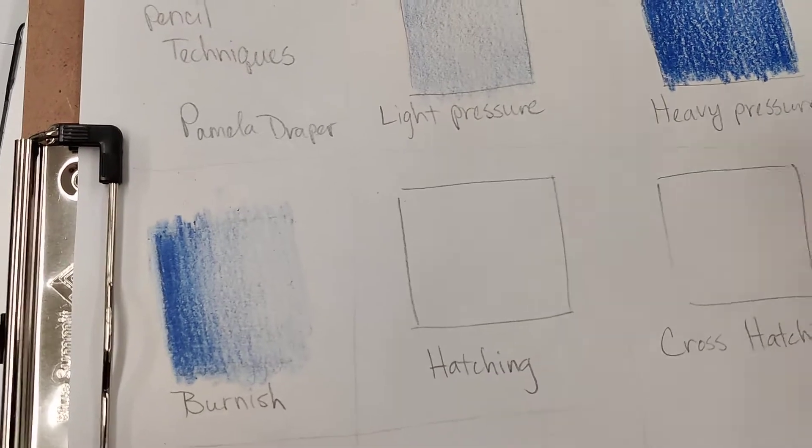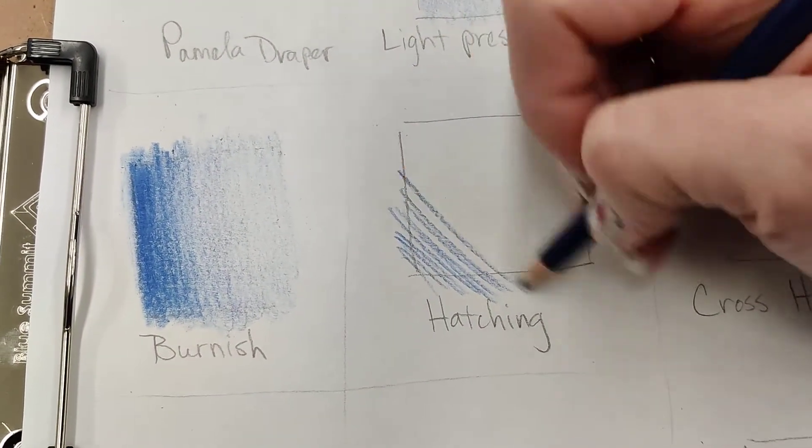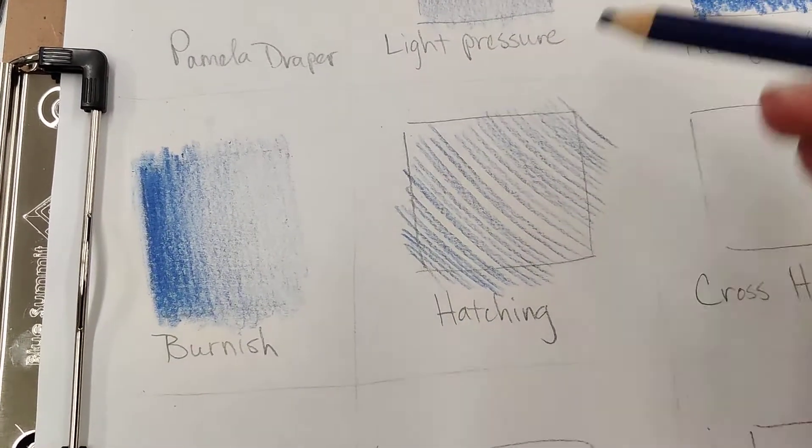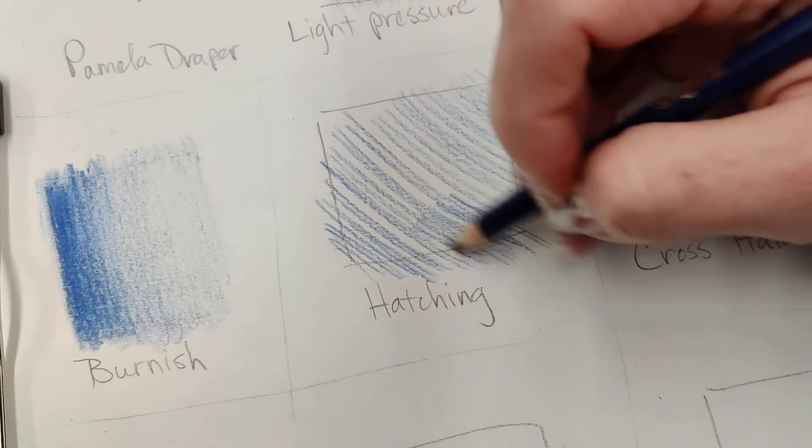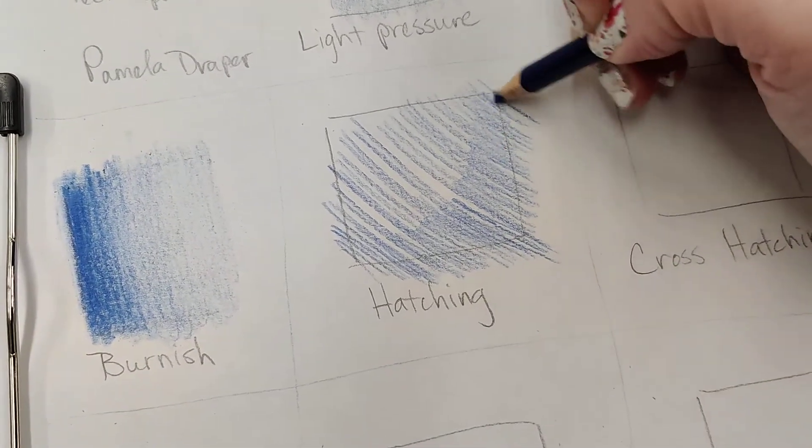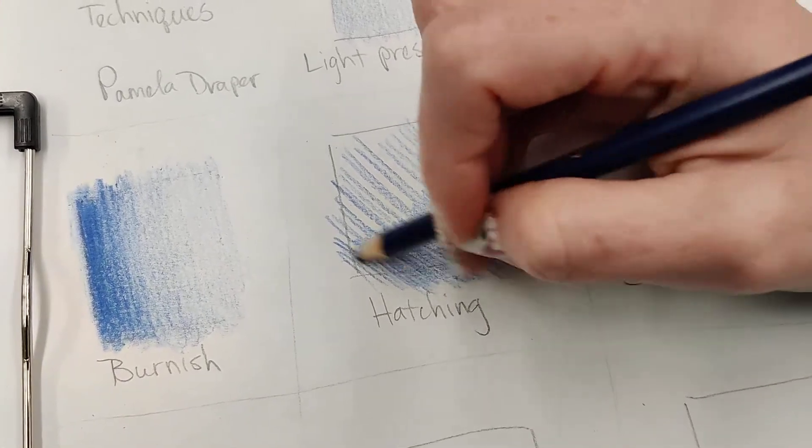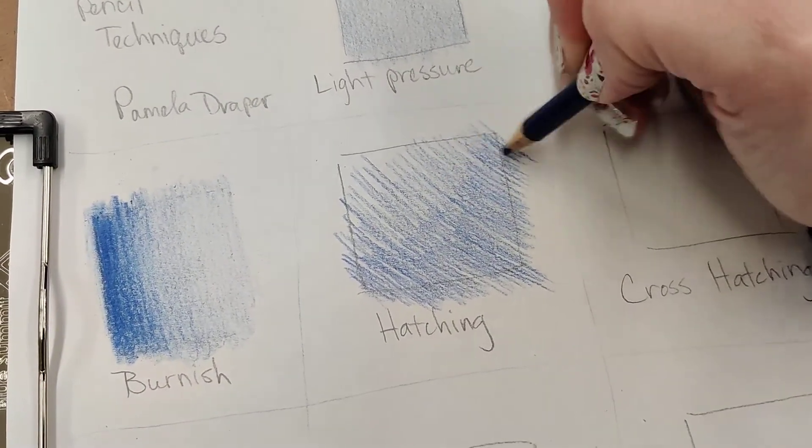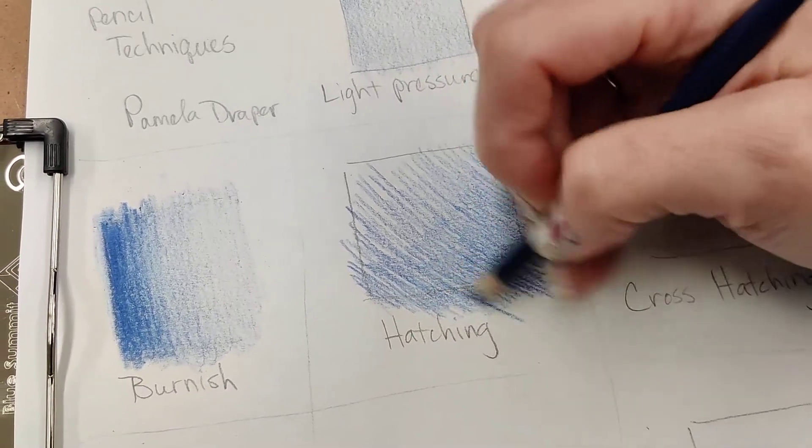So now we have hatching. Now, you should remember hatching from when we did our value scales back at the beginning of the year. Hatching is going in one direction and making lots of straight lines right next to each other, all going in the same direction. They could go up and down. They could go the other way, but they all go the same direction. Now, if you go back and you want to make them darker, you would just add more lines. So this works great for pencil. This works great for color pencil. It works great for pen. Hatching can be your friend.